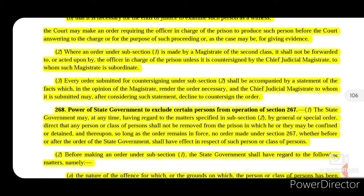Where an order under subsection 1 has been made by a magistrate of the 2nd class, it shall not be forwarded to or acted upon by the officer in charge of the prison unless it is countersigned by the Chief Judicial Magistrate to whom such magistrate is subordinate. So a 2nd class magistrate does not have the power to directly require the officer in charge of a prison to act upon such order unless it is countersigned by the CJM.